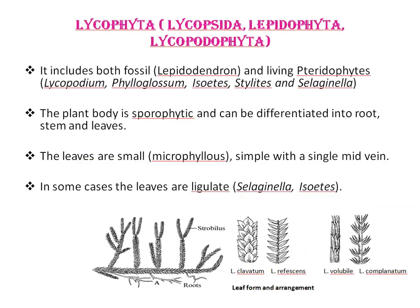Next is Lycophyta. Lycophyta includes both fossil and living pteridophytes — fossil examples include Lepidodendron, and living examples include Lycopodium, Phylloglossum, Isoetes, Stylites, and Selaginella. The plant body is sporophytic and well differentiated into root, stem, and leaves, as seen in Lycopodium. Leaves are small and microphyllous, with a single midvein. They are usually spirally arranged, sometimes in opposite fashion or even in whorls.